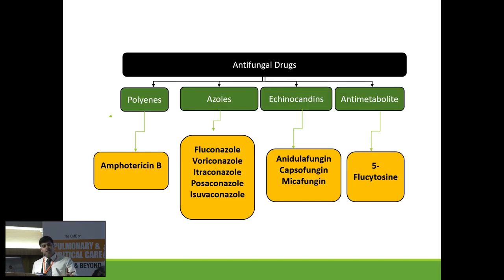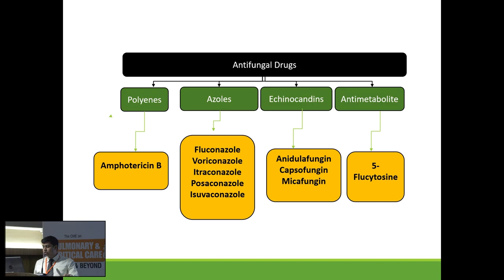Antifungal drugs are classified into four categories based on their mechanism of action: polyenes, azoles, echinocandins, and antimetabolites. Polyenes include Amphotericin B, which comes in four different forms. Azoles include Fluconazole, Voriconazole, Itraconazole, Posaconazole, and the newest Isavuconazole. Echinocandins include Anidulafungin, Caspofungin, and Micafungin. The antimetabolite is 5-Flucytosine.